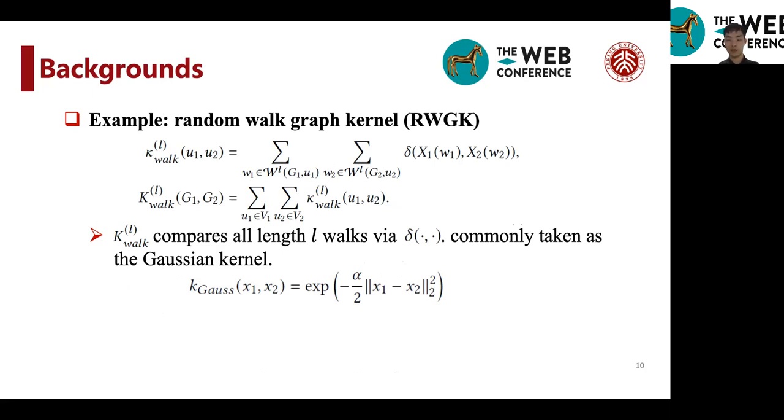And in practice, the delta kernel is commonly taken as the Gaussian kernel or the RBF kernel. It is commonly used in different pattern recognition works. Basically, this kernel is very useful in classifying graphs, which serves as a very powerful baseline.